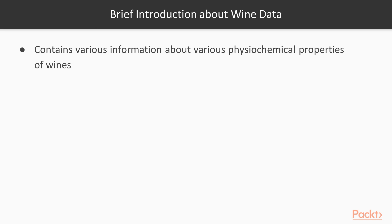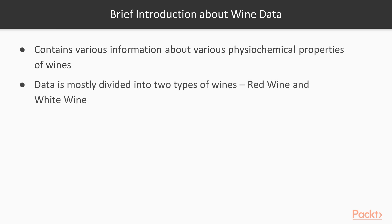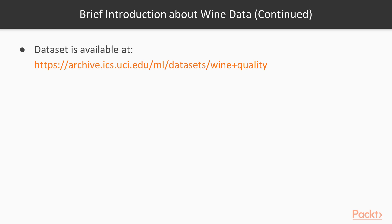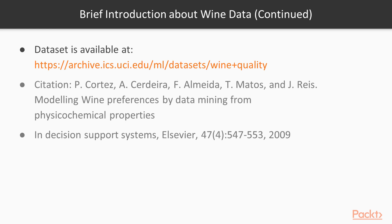The wine data set contains information about various physiochemical properties of wines. The data set contains information about two types of wines: red wine and white wine. Each wine has a quality label associated with it, which defines the relative quality of the wine on a scale of 0 to 10. The data set is available at a link for download and you can refer to the original paper for more information.